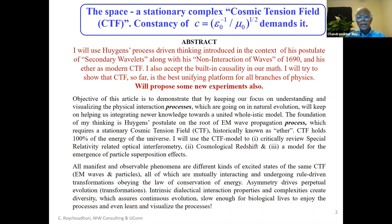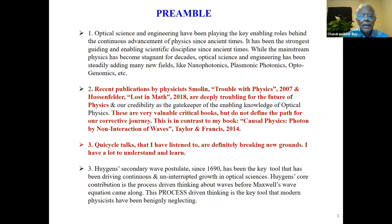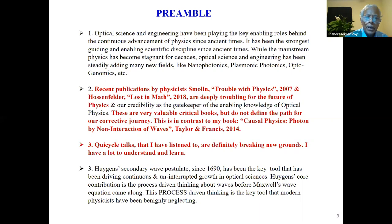I'm also proposing experiments that I have not yet been able to do. I proposed something to NASA twice and it was rejected. I want to go through some preamble, which is that recent publications — Smolin's 'Trouble with Physics' from 2007 and Hossenfelder's 'Lost in Math' — I was impressed reading both. I was looking for whether they give us a process to redirect physics toward a more grounded evolution, and I didn't see that.